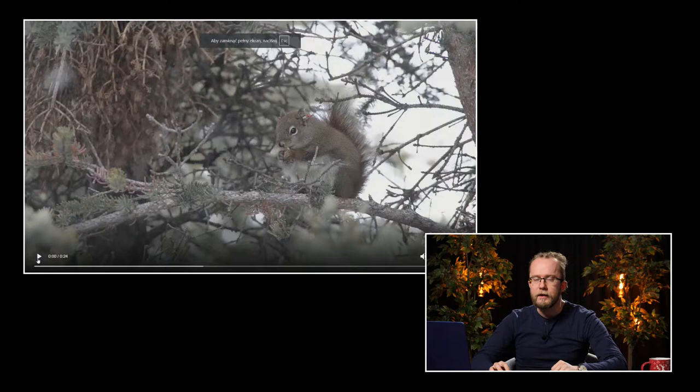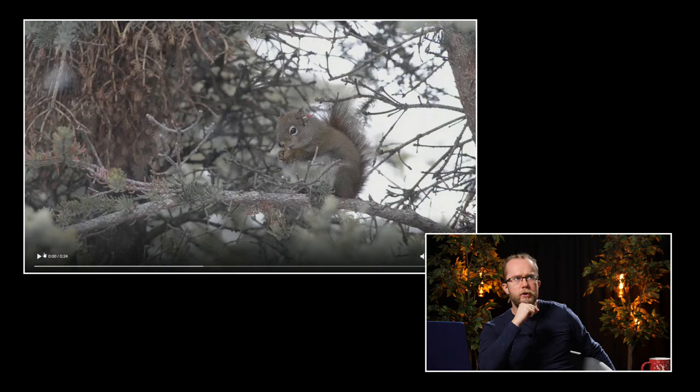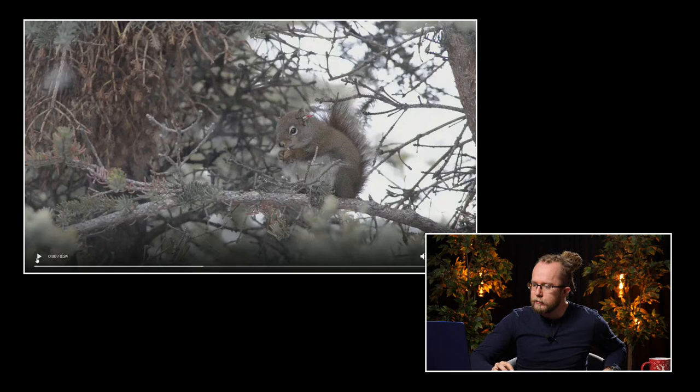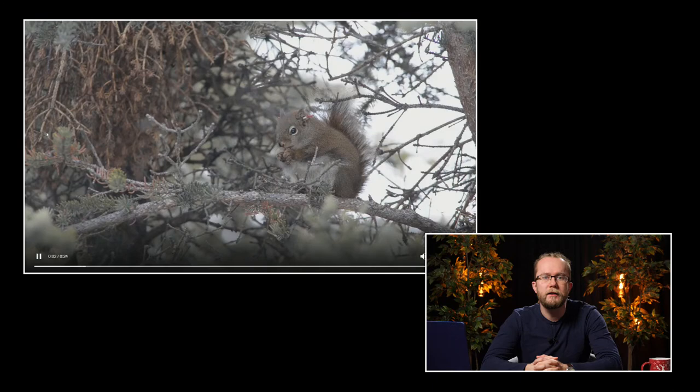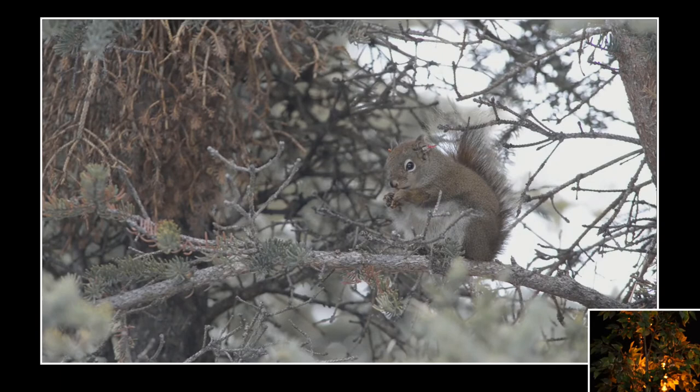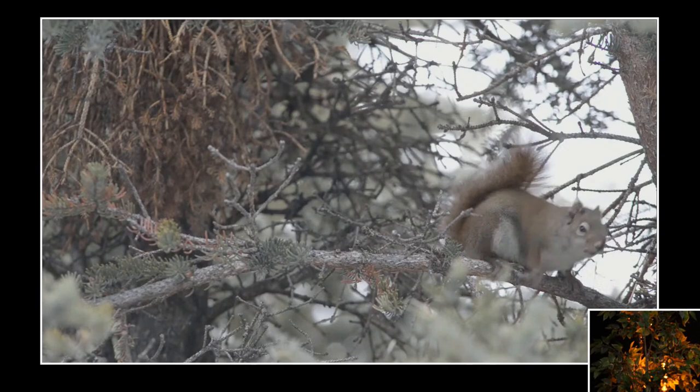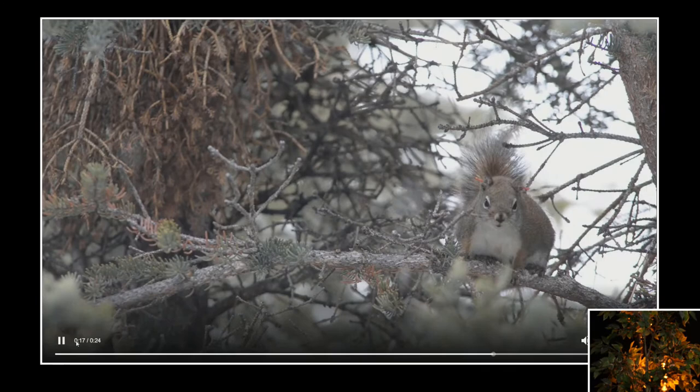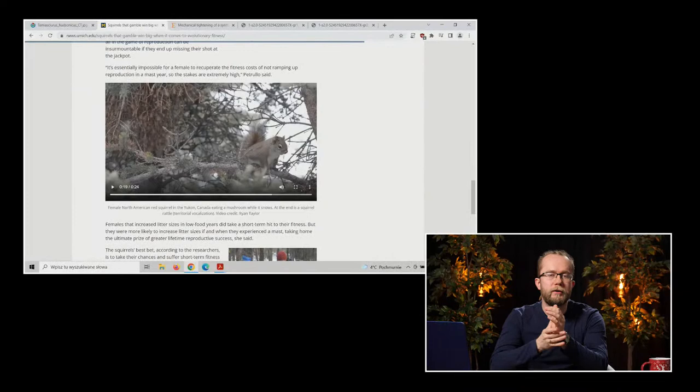I co robią? Jedzą. Żywią się w dużym stopniu szyszkami świerka. Konkretnie nasionkami, które tam się w środku znajdują. Tak wygląda, słuchajcie, sosnowiórka w czasie śnieżycy zajadająca grzybka. Więc wczuliśmy się już w klimat. Mówimy, jak widzicie, o gryzoniach żyjących w zimnym, zimnym terenie.